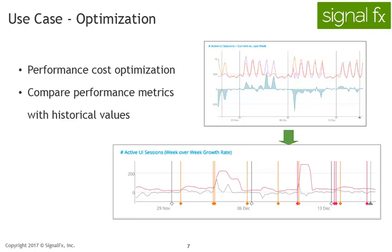Comparison of performance metrics with their historical values helps measure the effectiveness of optimizations or identify performance regressions introduced by new code.